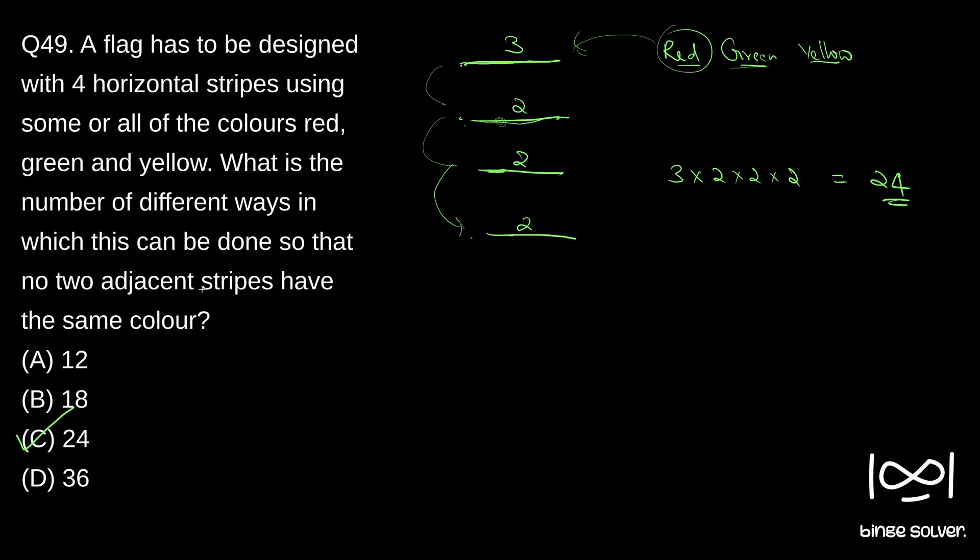In case you are not understanding why 3 × 2 × 2 × 2 is the total number of cases, I advise you to again visit the video on permutation and combination where I am discussing the fundamental principle of multiplication, which is what we use here. If you are not familiar with that concept, just you can find that permutation and combination video in the playlist Basic Concepts of Mathematics in my channel.